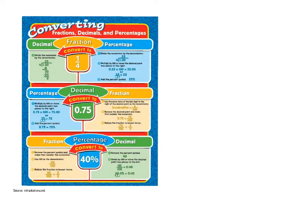If you're starting with a percentage and need to convert it to a fraction, remember that all percentages are out of 100. So put the number over 100 and reduce it. To convert a percent to a decimal, divide by 100 or move the decimal two places to the left. For example, 40% is the same as 2/5 and 0.40.